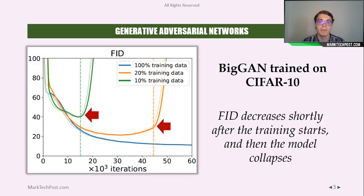In this picture, you can see BigGAN trained on CIFAR-10 with respect to 10%, 20%, or 100% of the available training data. As you can see, the performances are very poor when using a small amount of data.